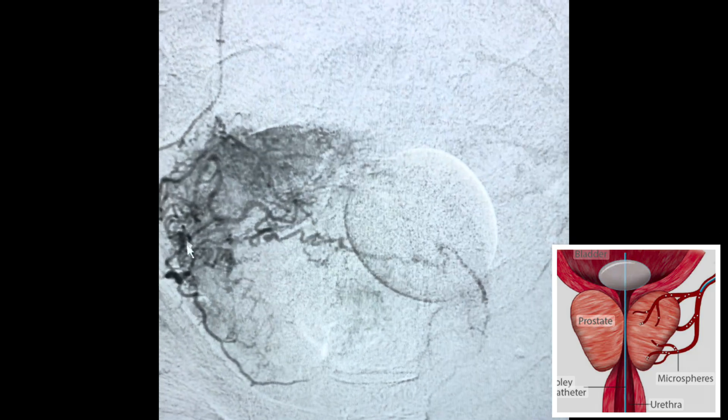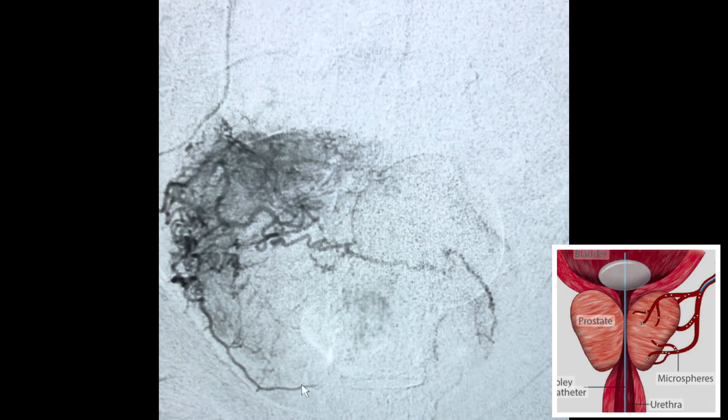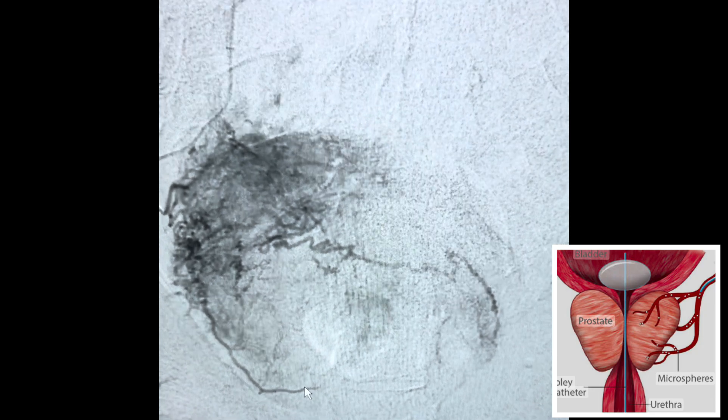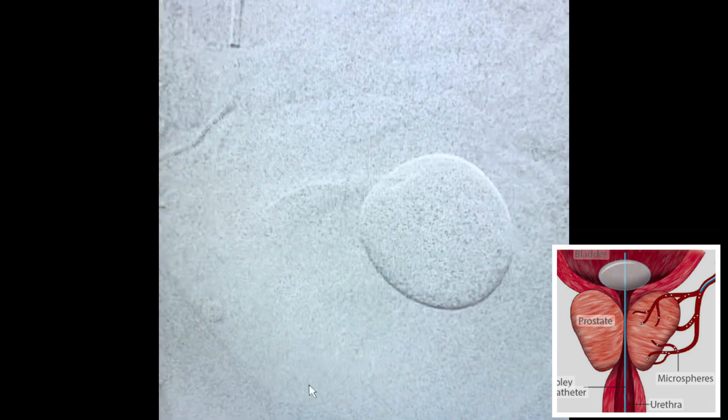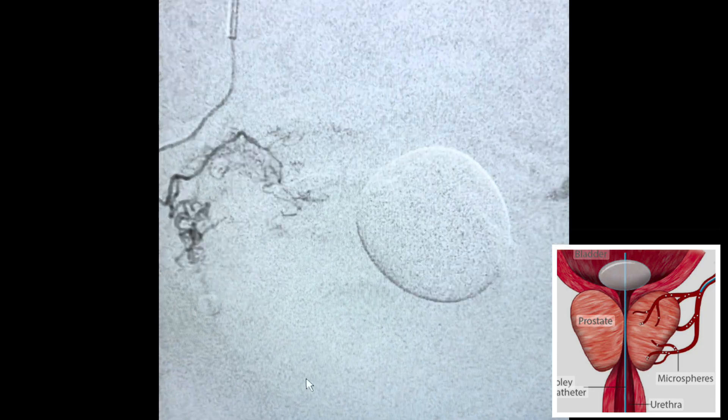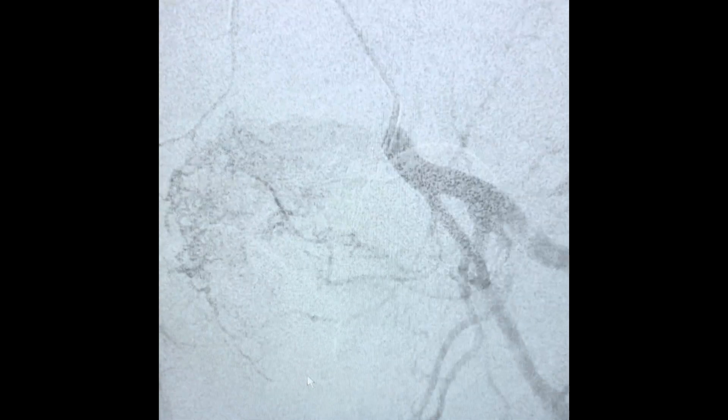Once we've identified the prostatic artery, we're going to start the treatment, typically with 300 to 500 micron particles to stop the blood flow to the prostate gland.